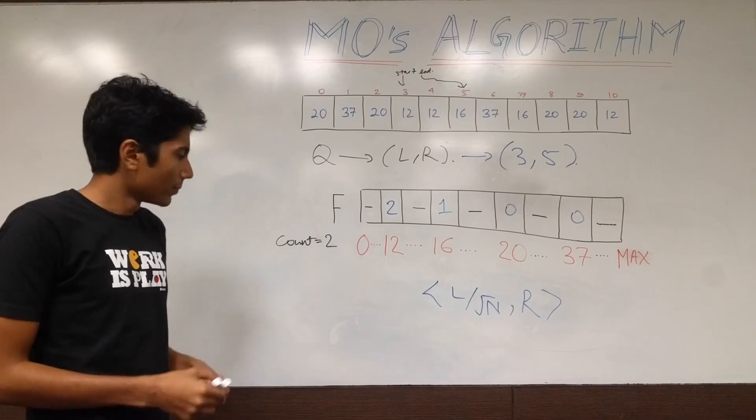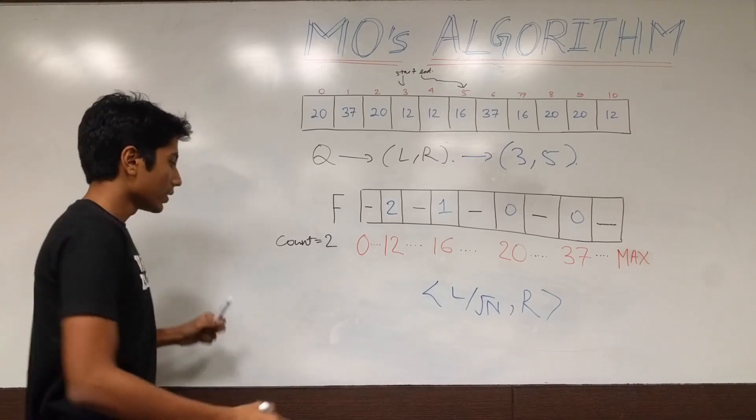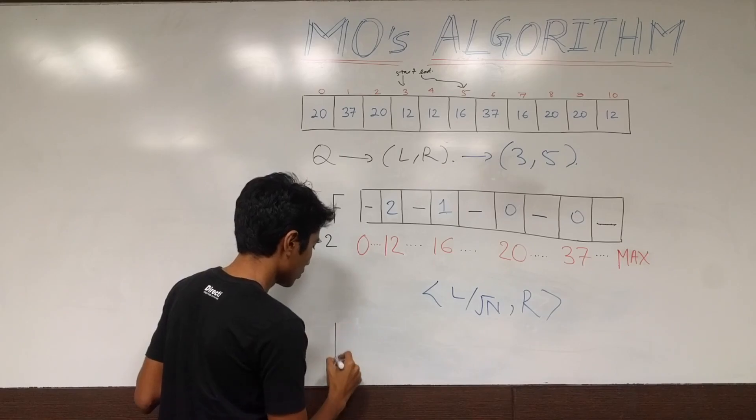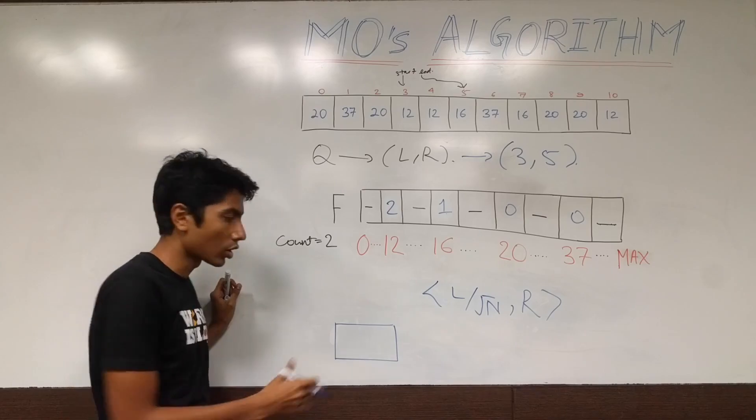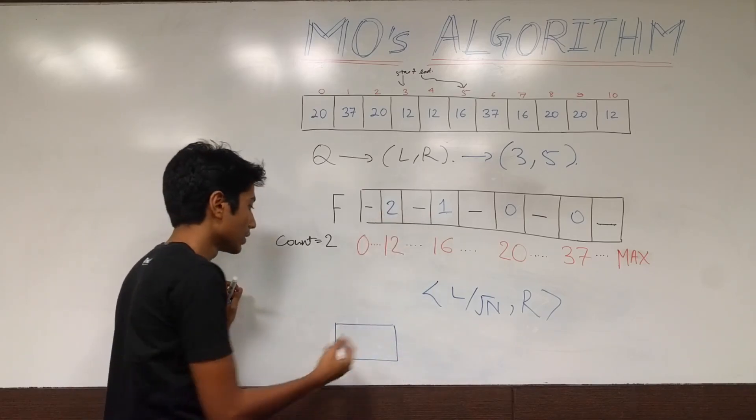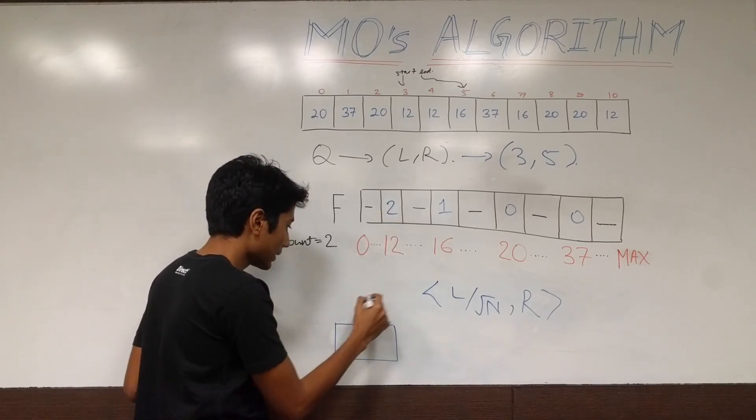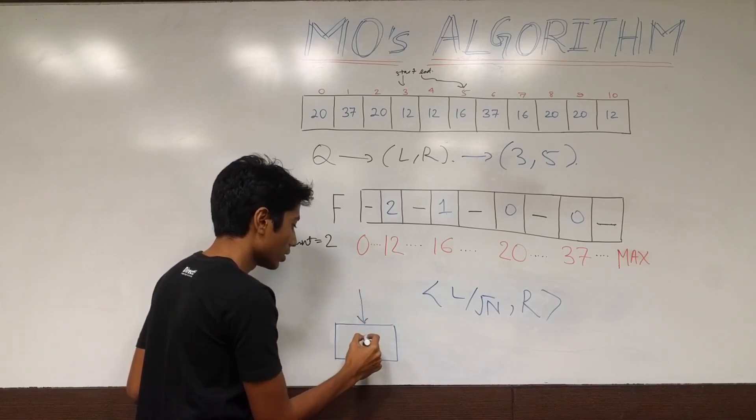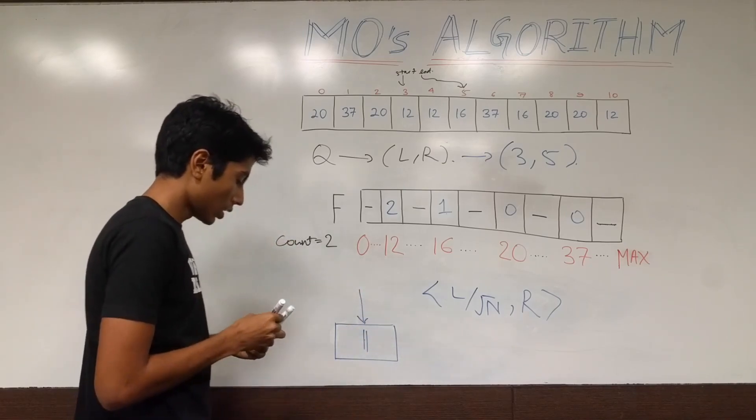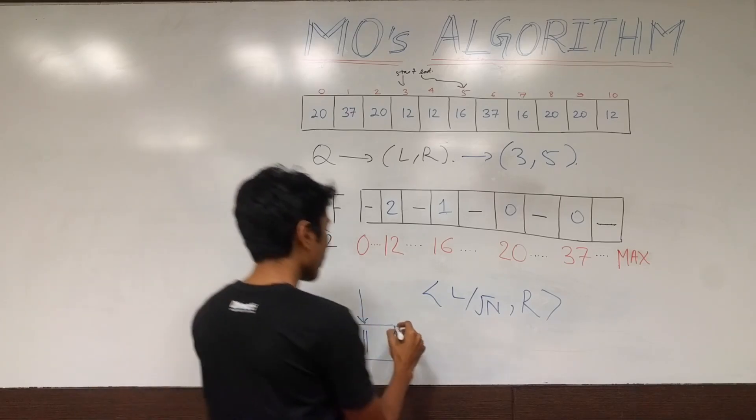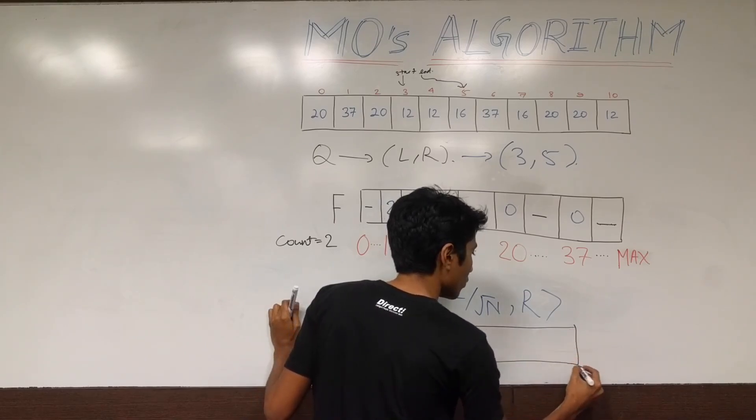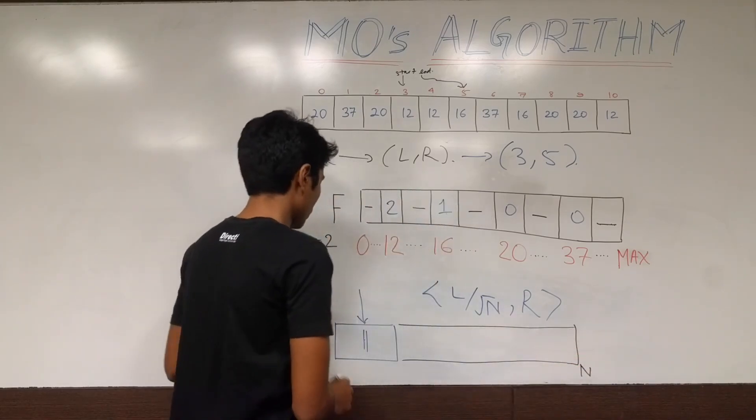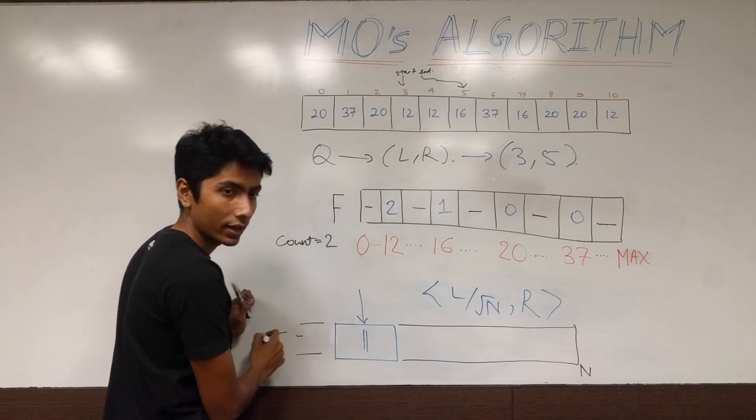So, essentially what happened? Well, let's come to a normal query. Let's say this is the block on which it's falling. Now, this block is logical. You are not actually breaking the array into blocks or anything. So, let's say left is somewhere over here. And, this is your remaining array. We have n here. And, we have some more of the array on the left.